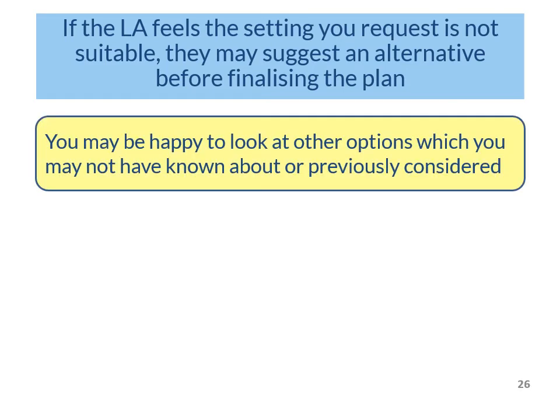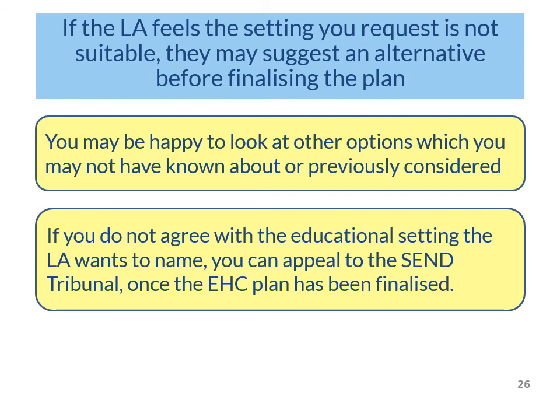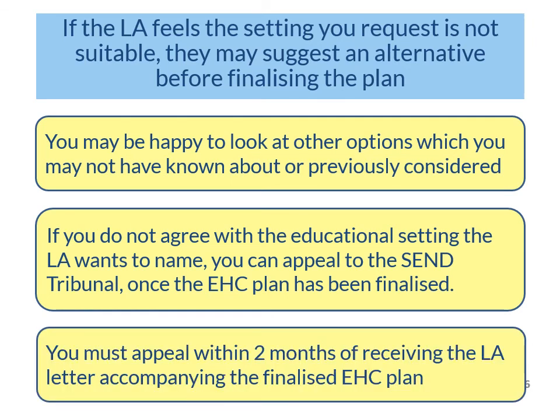You may be happy to look at other options you may not have known about or previously considered. But if you don't agree with the educational setting that the LA wants to name, you can appeal to the SEN Tribunal once the EHC plan is finalised. You must appeal within two months of receiving the local authority letter accompanying the finalised EHC plan — this letter gives you the right to appeal.